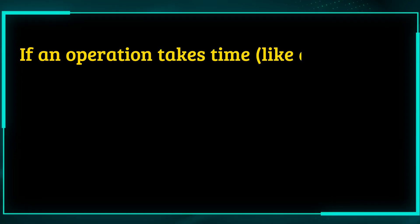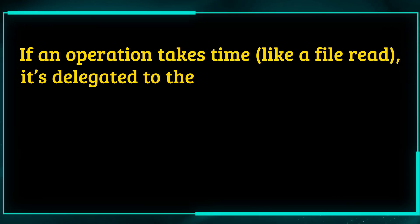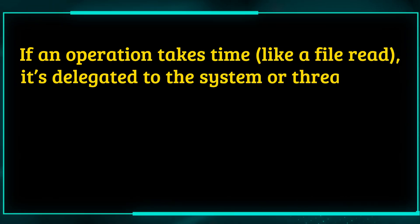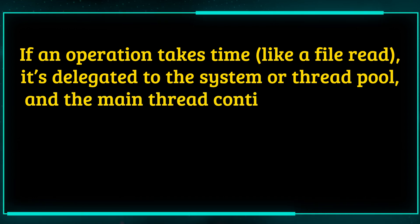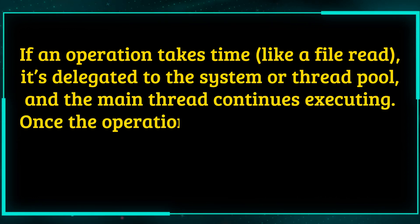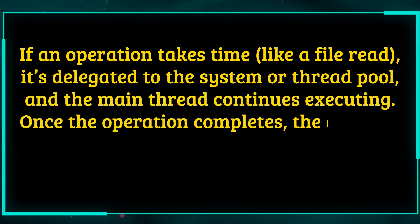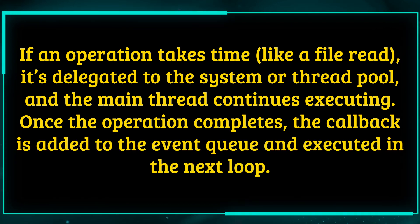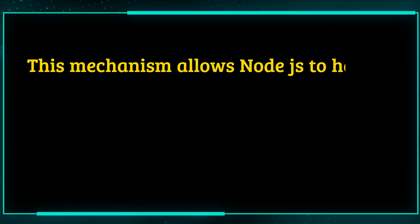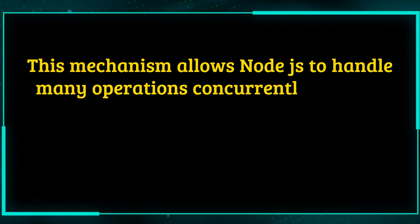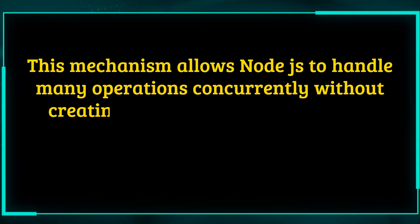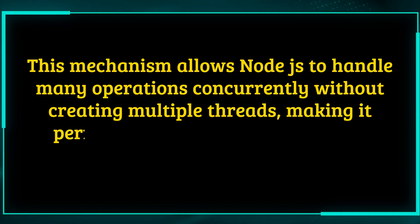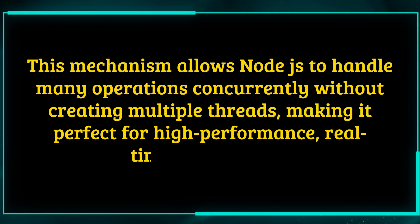If an operation takes time, like a file read, it's delegated to the system or thread pool, and the main thread continues executing. Once the operation completes, the callback is added to the event queue and executed in the next loop. This mechanism allows Node.js to handle many operations concurrently without creating multiple threads, making it perfect for high-performance, real-time applications.